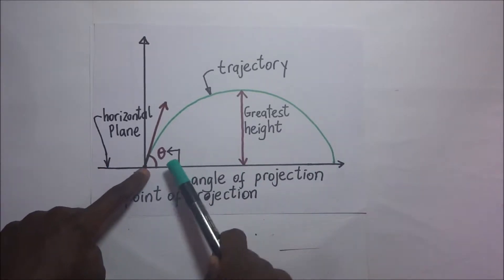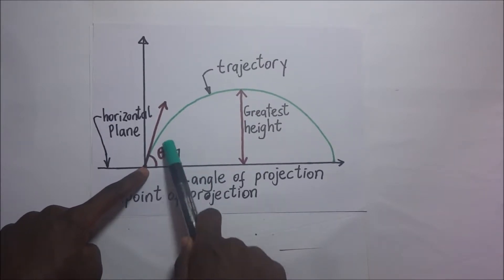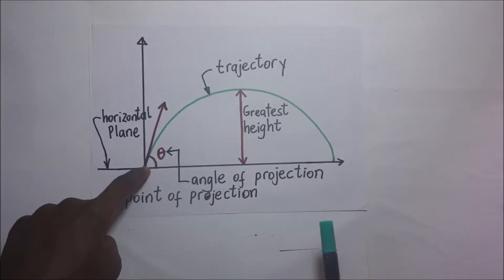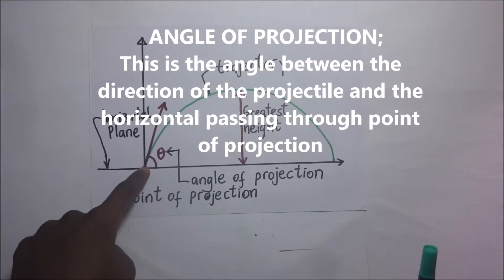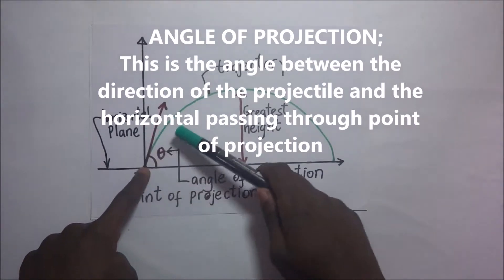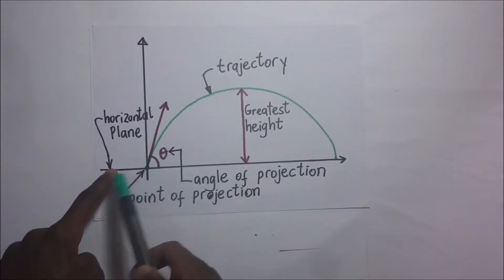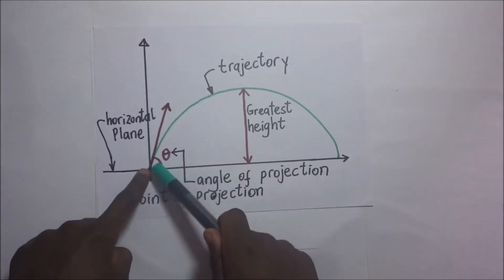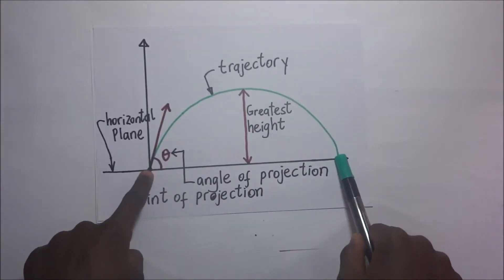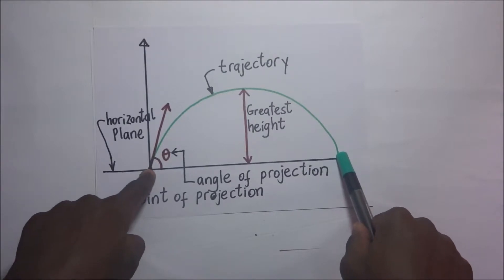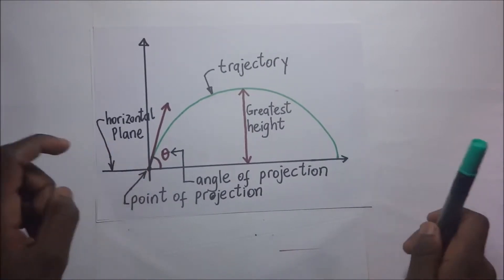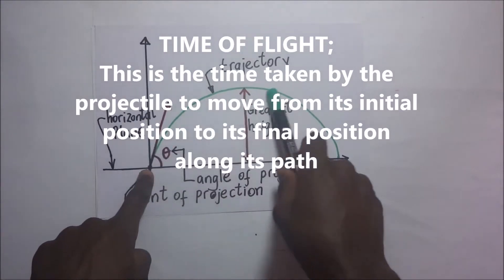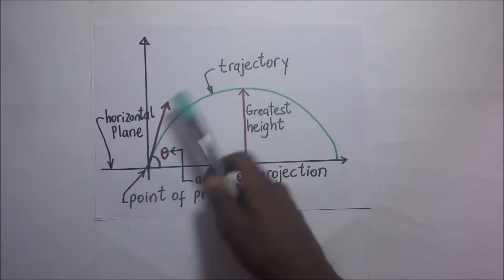The angle between the direction in which the ball is kicked and the horizontal passing through the point of projection is what we call the angle of projection. The angle of projection is simply the angle between the direction of the projectile and the horizontal passing through the point of projection. For the projectile to travel from its initial position to its final position along the trajectory, it takes some time — and that time is what we call the time of flight.